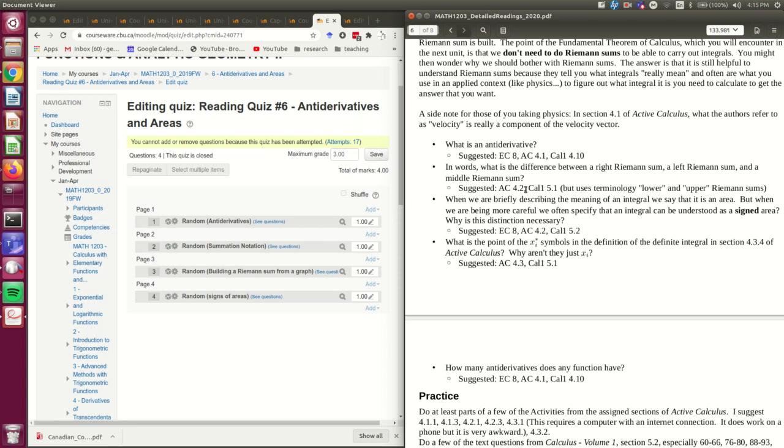Here's an example from one of my classes. This is from a calculus course, and you're looking at a quiz with four questions. The first is a random question from a topic called antiderivatives, so that's a category in my database. Similarly, here's another category in my database, and so on. Each question is drawn from a different category in my questions database, so each student is going to get one question from each of these categories.